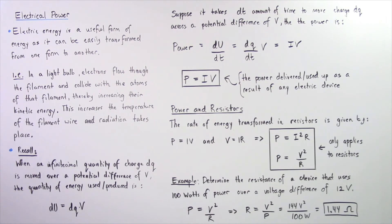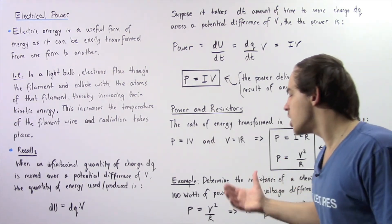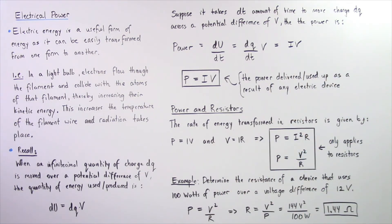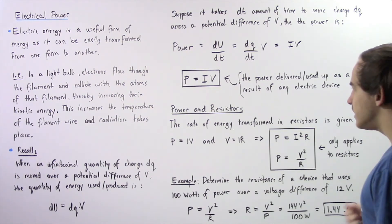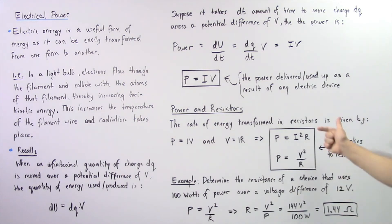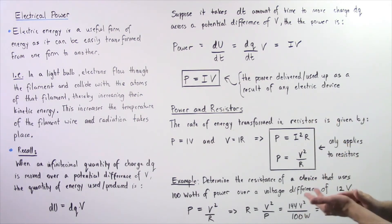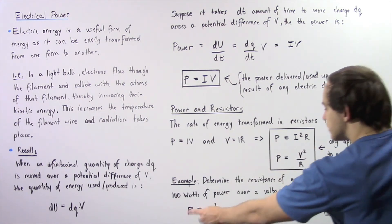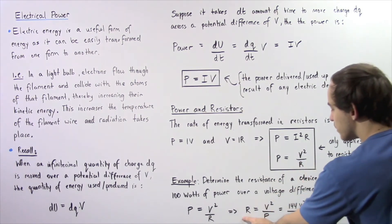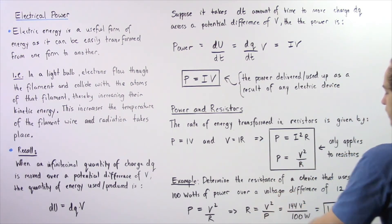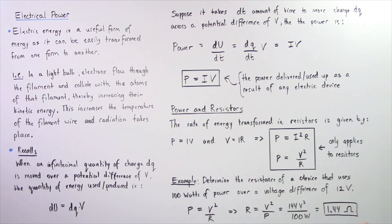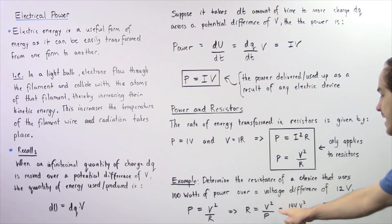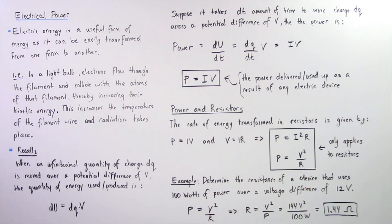Let's look at an example. We want to determine the resistance of a device that uses 100 watts of power over a voltage difference of 12 volts. Since we know the power and the voltage, we use the equation P = V²/R and solve for R. The resistance equals V² divided by P, which gives 12 squared — 144 volts squared — divided by 100 watts, giving us a resistance of 1.44 ohms.